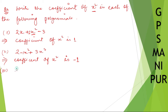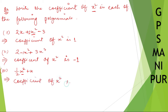Roman number three: one by two x square plus x. If you look here, the coefficient of x square is one by two. So coefficient of x square is one by two.